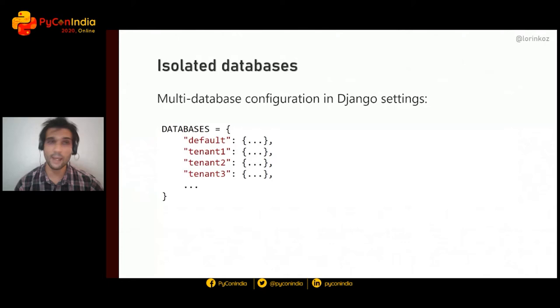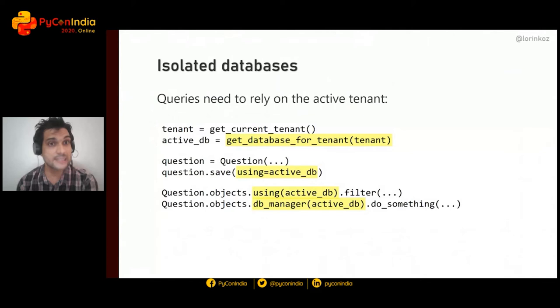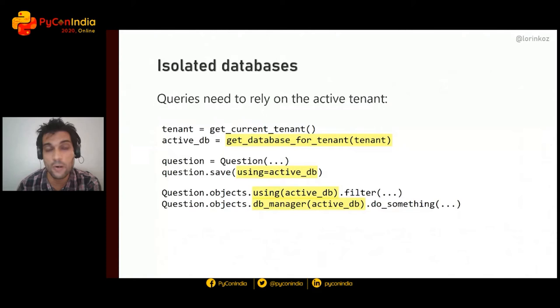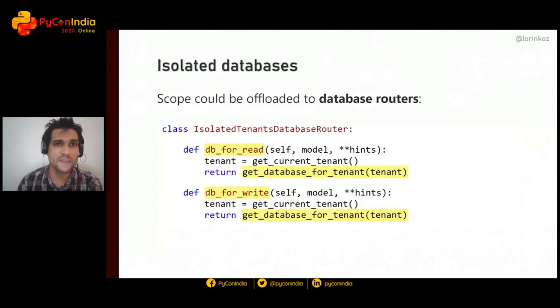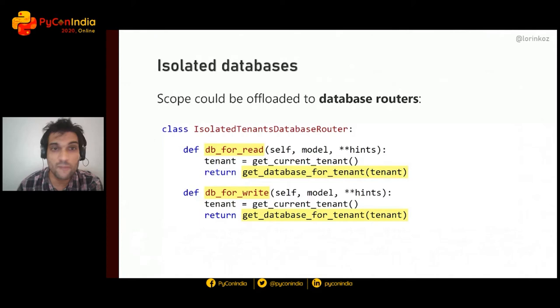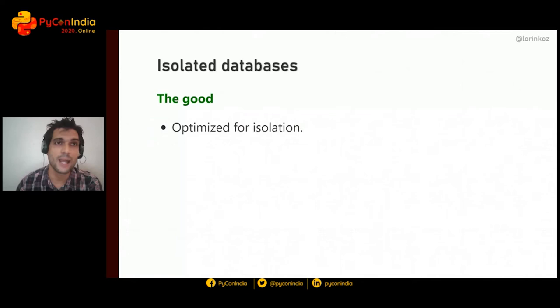The isolated approach uses multiple databases, one per tenant. Django is compatible with multi-database configuration, so in practice there's nothing stopping you from having each tenant correspond to one database. You'll need a translation function from tenant to database alias, then use that alias for queries, saving objects, or creating a scope manager. This work can be automated via database routers.